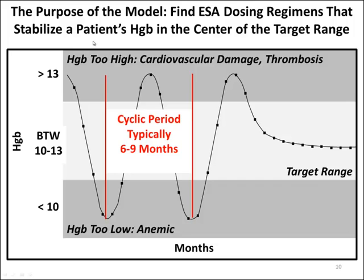The goal of the model we wanted to put in place — being system dynamics — is that we realized there was a structure that generated this oscillation having to do with red blood cell production, and we could find it. We could dampen that oscillation and find the ESA dosing levels that would stabilize the patient's hemoglobin in the target range. That was the goal of the project.